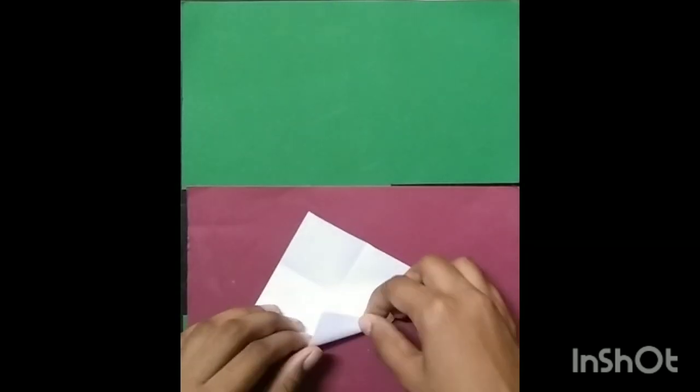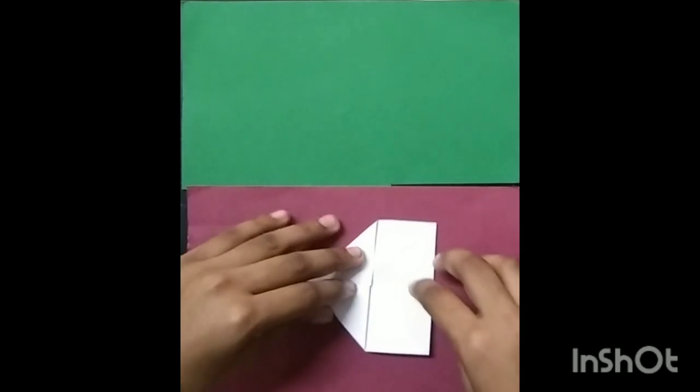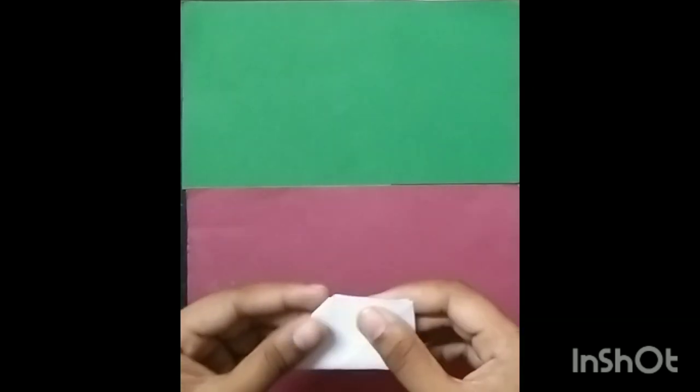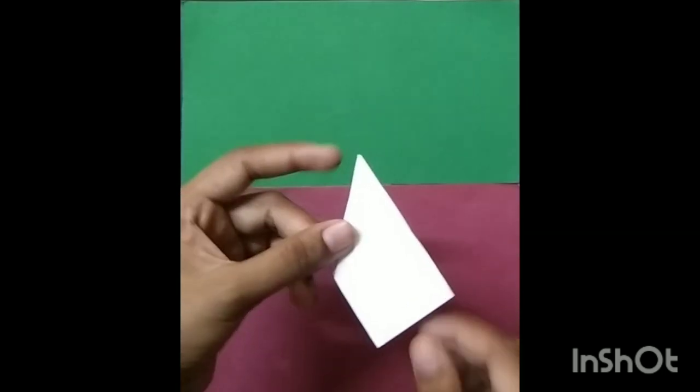Now you are going to bring the adjacent sides to the center. Just 2 of them. And now if you get like this, you are going to fold it like this. So you will get like this right.